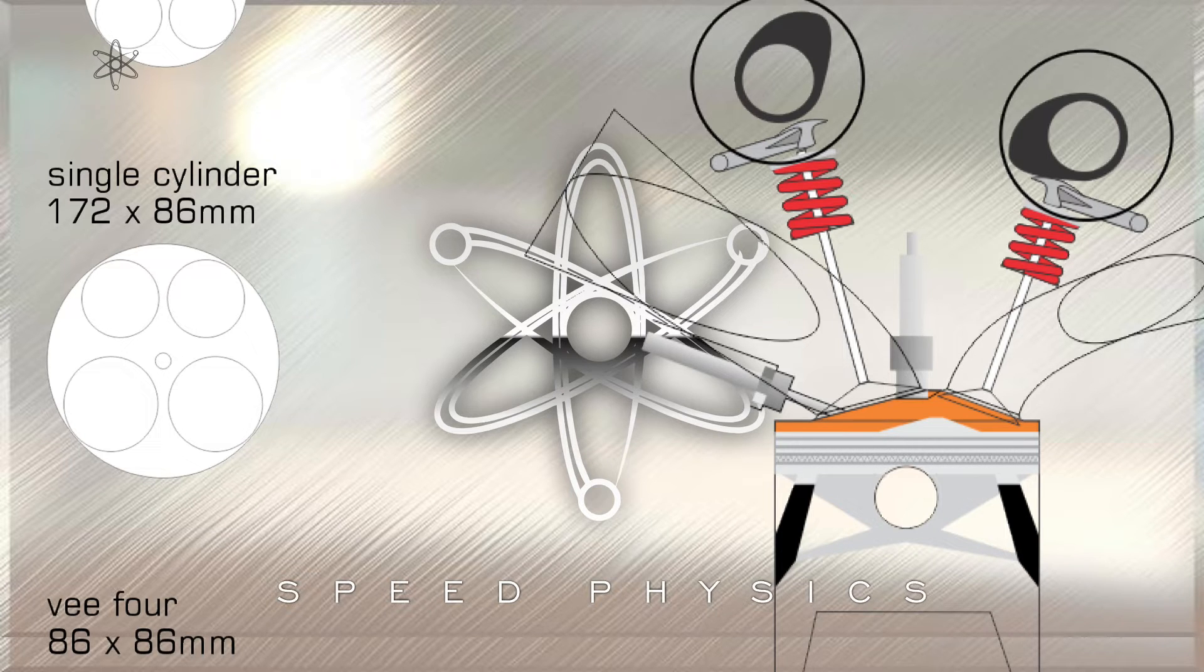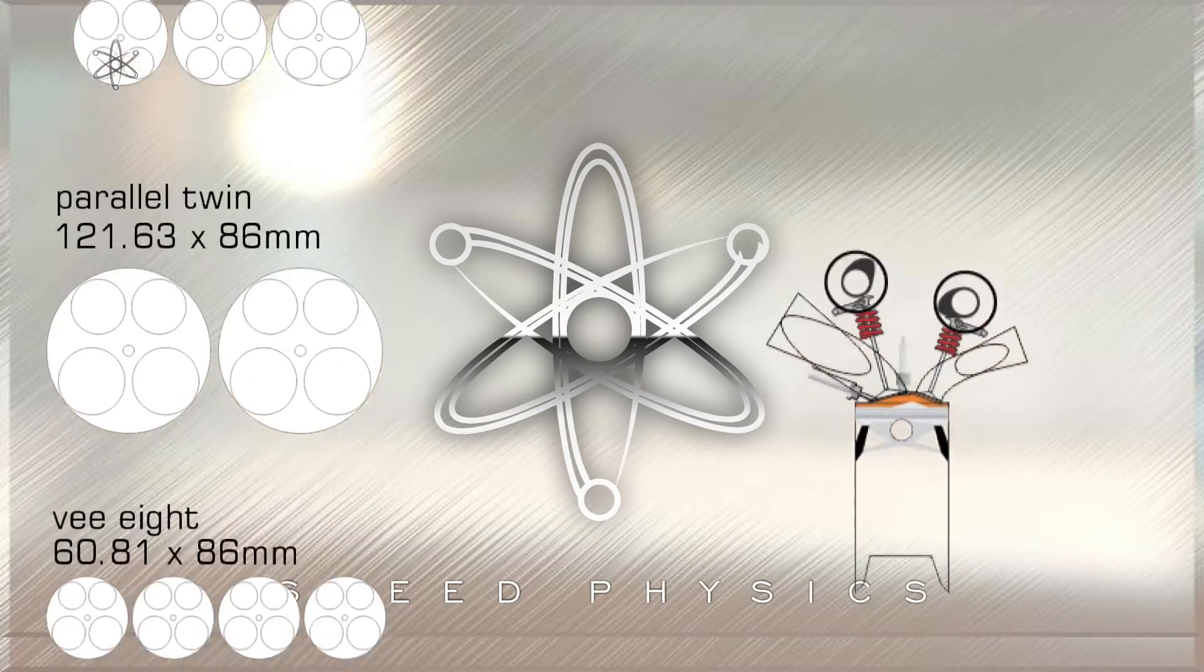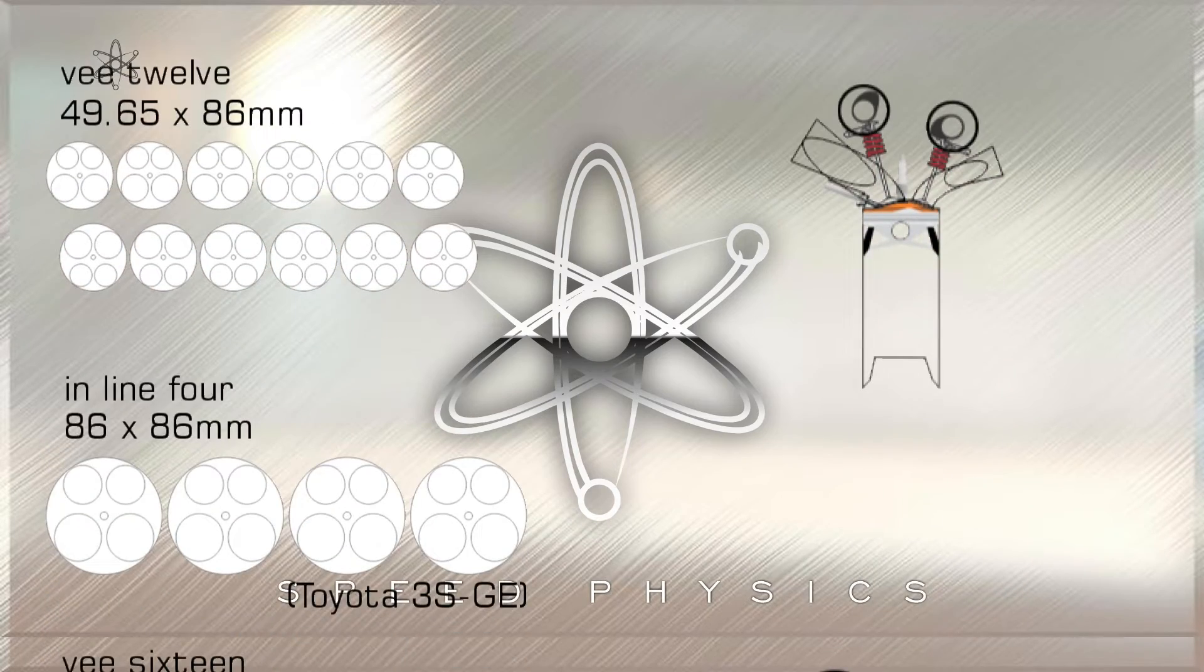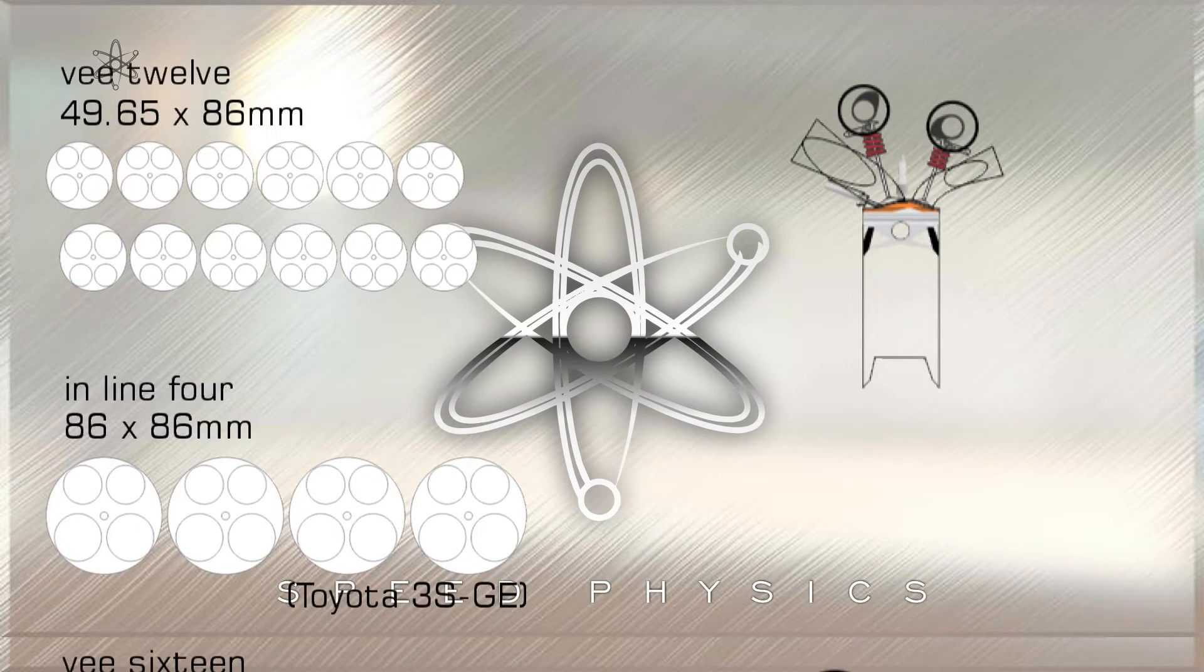A single cylinder version would need a bore size of 172mm or 6.77 inches to get 1,998cc and on the other end a 12 cylinder engine with 86mm of stroke would need a bore size of 49.65mm to get 1,998cc.